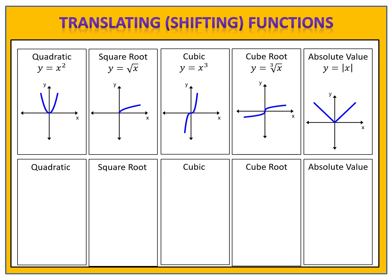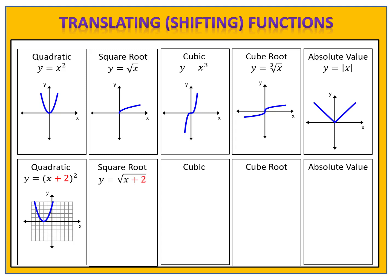Shifting a function left or right works the same way for all of them as it does for the quadratic. If we take the quadratic and in the parentheses we add 2, we know that the parabola shifts to the left 2 units. If we take the square root function and add 2 inside the square root, the square root function will move left 2 units. The square root symbol — the radical — is equivalent to a parenthesis, so when we add 2 on the inside, that means the square root function is shifting to the left 2 units.